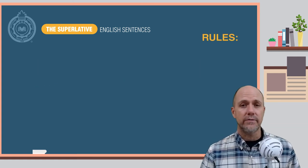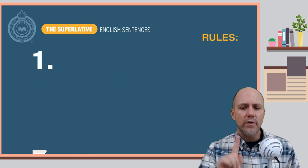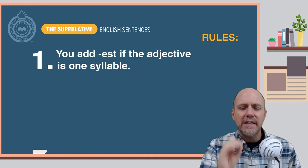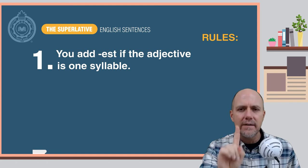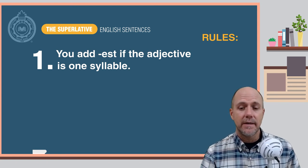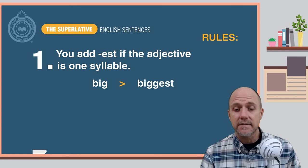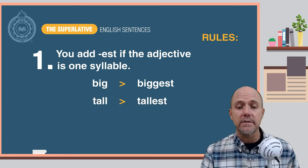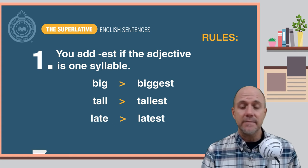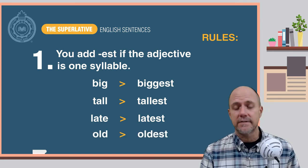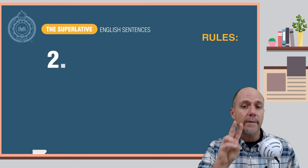Here are the rules. Rule number one: you add -est to the end of the adjective if it is one syllable. Here are some examples: big becomes biggest, tall becomes tallest, late becomes latest, old becomes oldest.